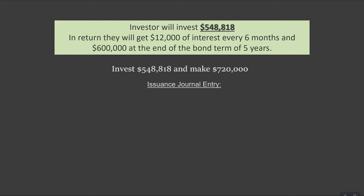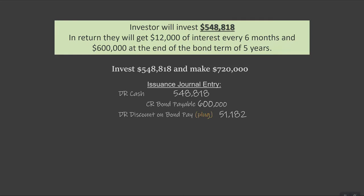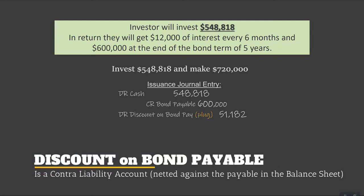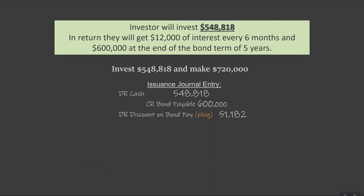Let's start working on our journal entries. At issuance of this bond, the company will receive cash of $548,818 — the value of the bond we calculated. They will credit bonds payable for the full maturity value of $600,000. The difference between those two is a plug. When that plug is a debit, it's a discount, and in this case our discount comes to $51,182. If we had a premium, it would be plugged as a credit.